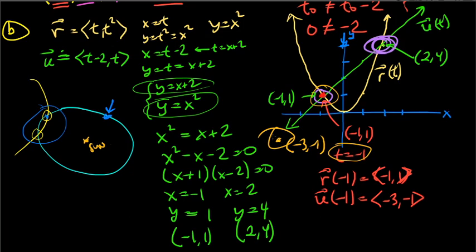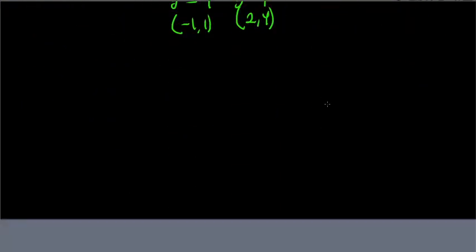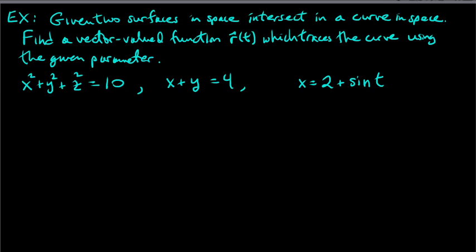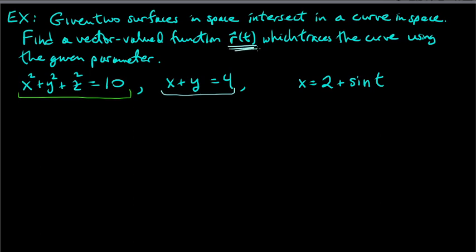Now a harder example: we're given two surfaces — the sphere x² + y² + z² = 10 and the plane x + y = 4. We want to find the vector-valued function r(t) that traces the curve of intersection of both surfaces. They give us that x = 2 + sin t as a starting point.